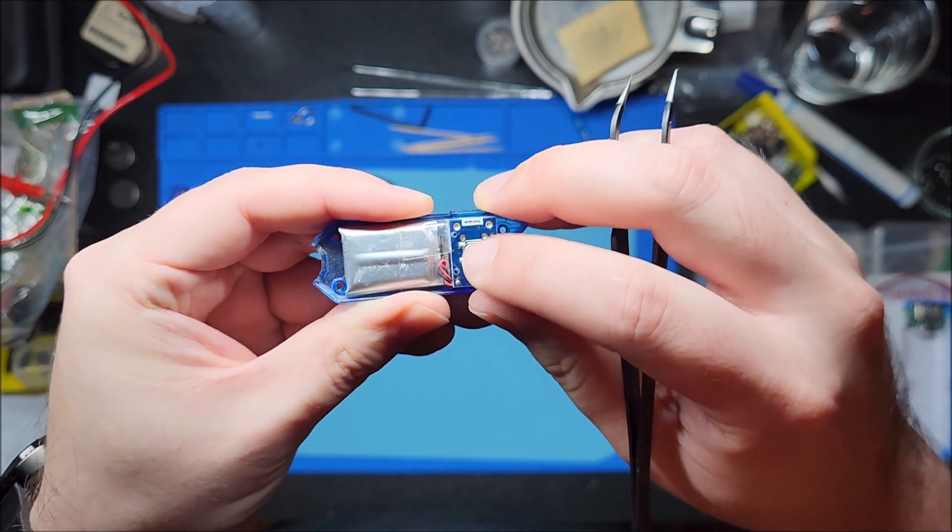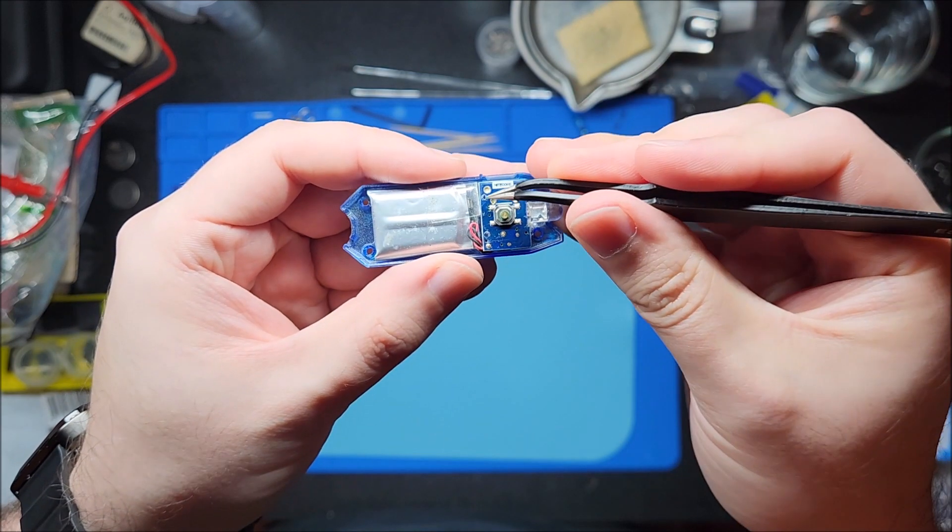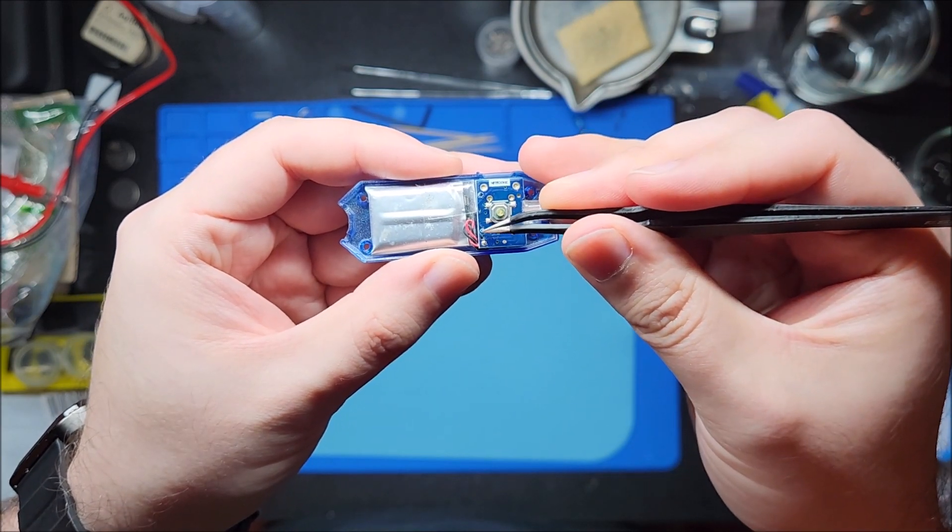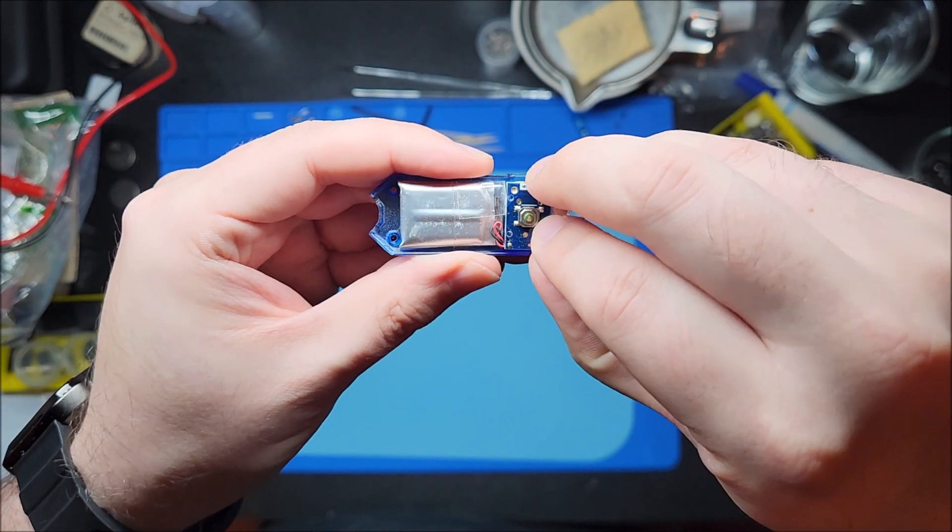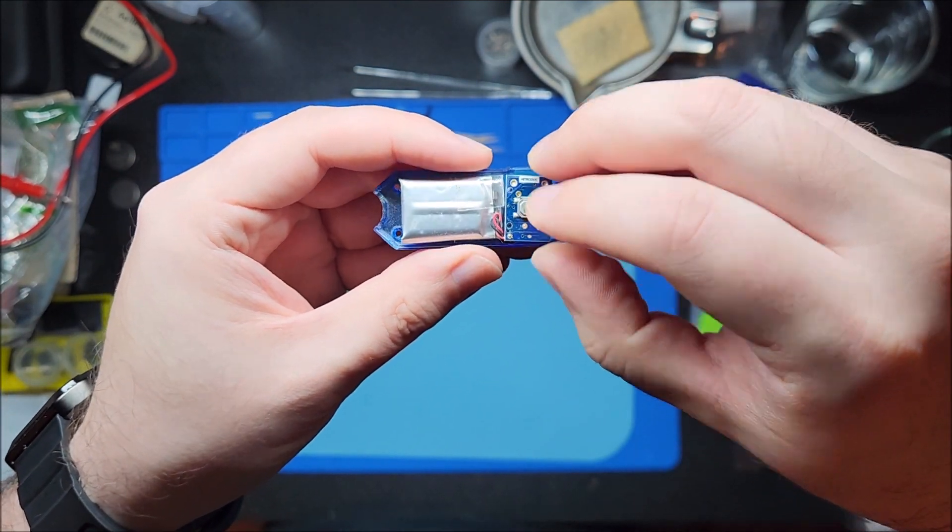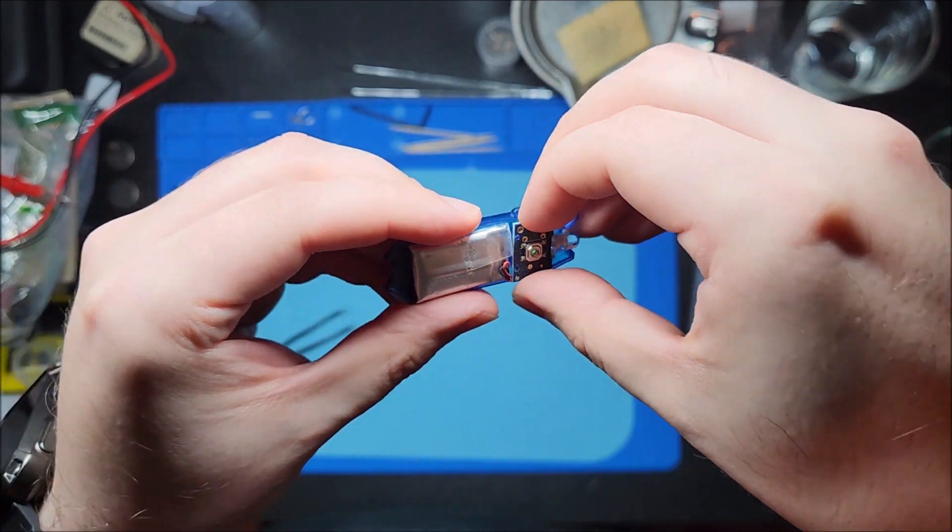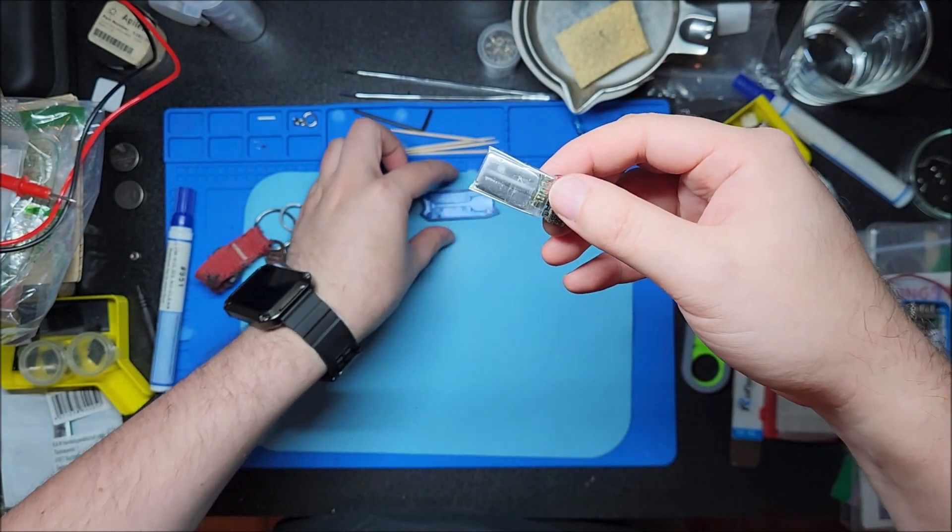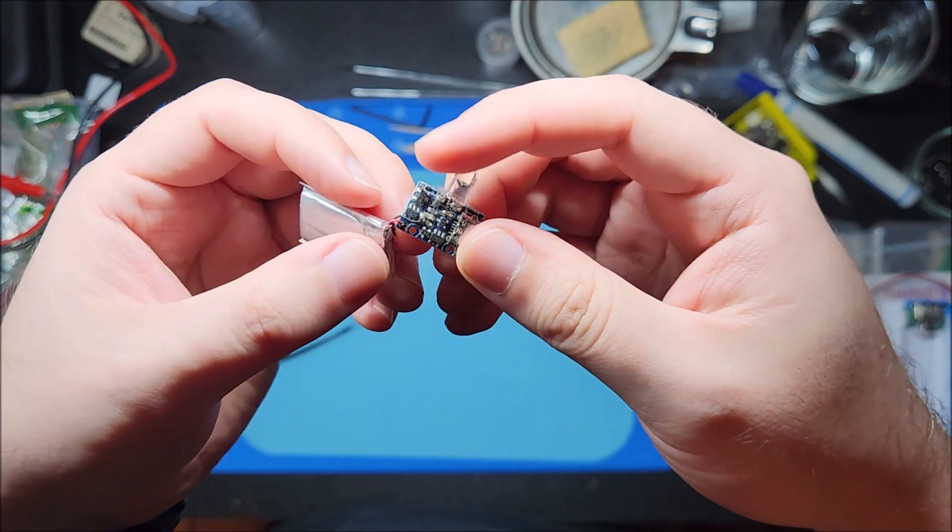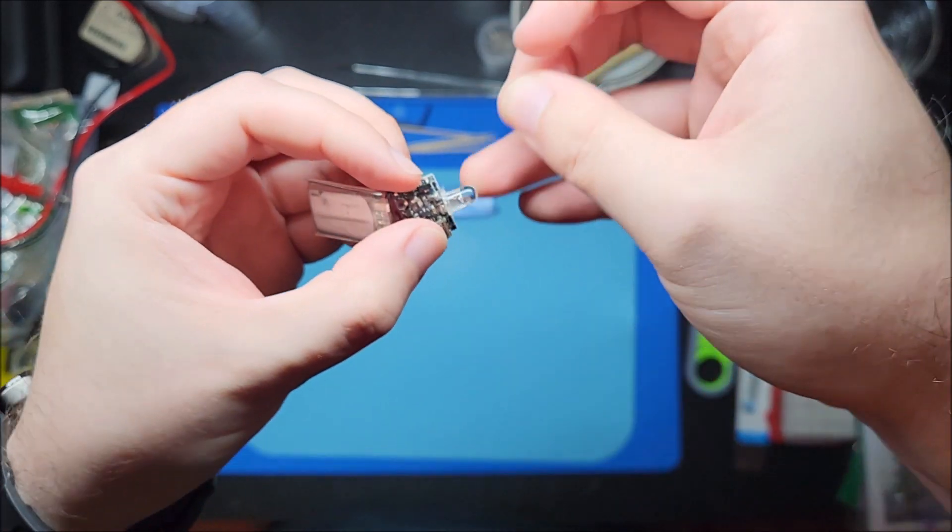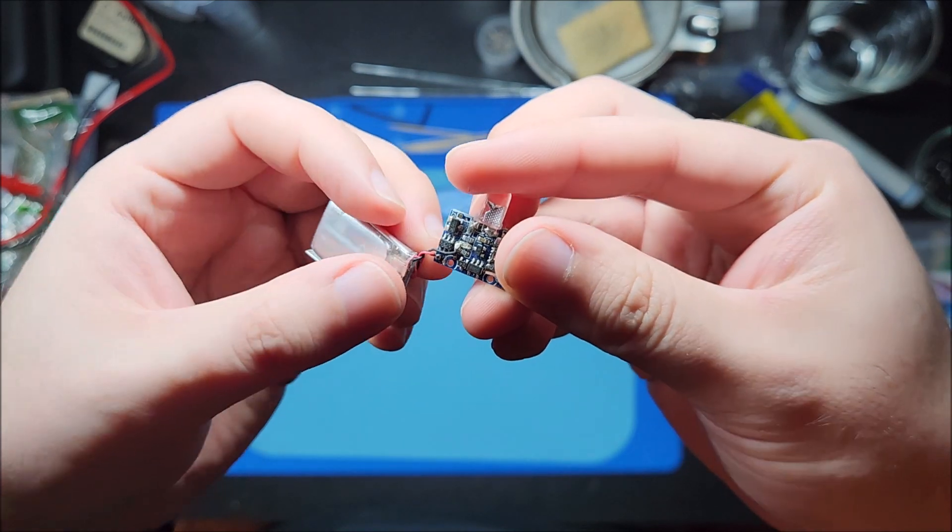There are two plastic heat-set threaded things that go through the board. You might have to break those off the first time or kind of wiggle them but you should be able to get this off. Then you're left with the very dusty board and the battery.